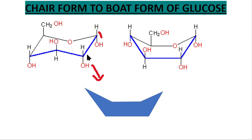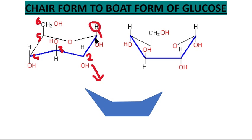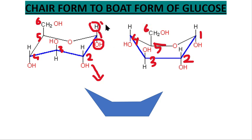After converting the chair form to boat form, we can see carbons 1, 2, 3, 4, 5, and 6. There is no change in the orientation of the hydrogen and oxygen groups. Here you can see carbons 1, 2, 3, 4, 5, and 6 — there is no change in the orientation of the hydrogen and hydroxyl groups between the boat form and the chair form.